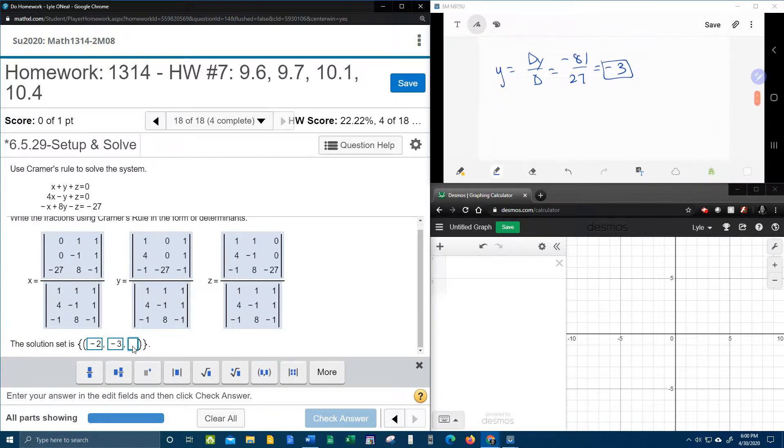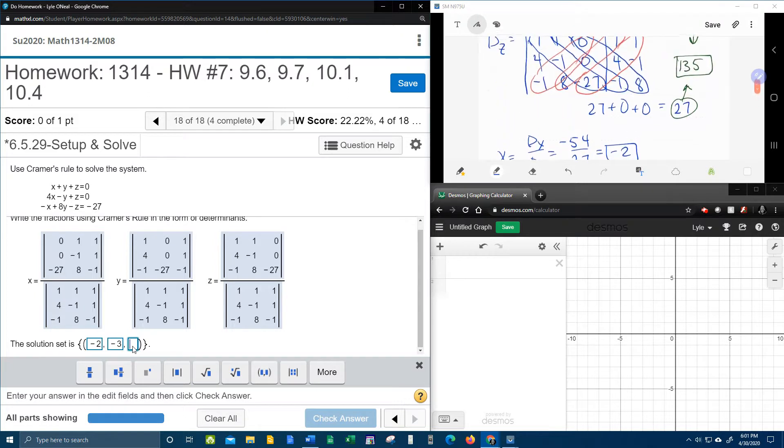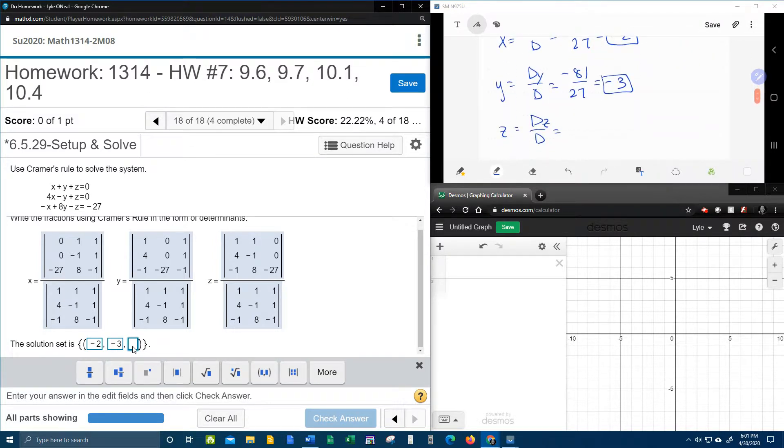And, last but not least, we have our value for Z. D sub Z over D. D sub Z was 135. Again, D is 27. And, I believe that's going to divide and make 4. Positive 4. I'm going to check with the calculator just to make sure. And, that... Oh, it's actually 5. Thank goodness for checking the calculator. That's actually a 5. Putting that in. Fingers crossed.